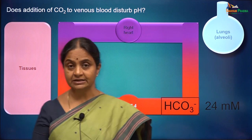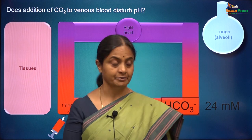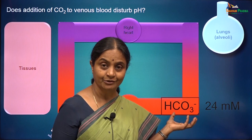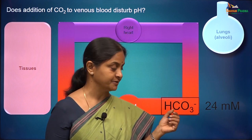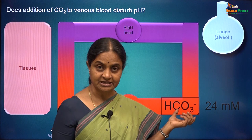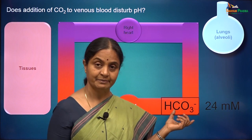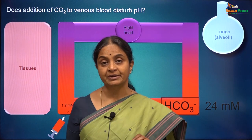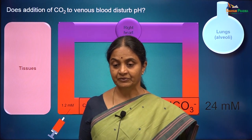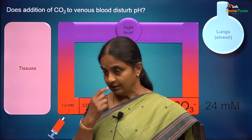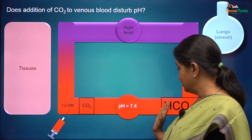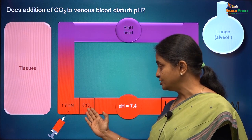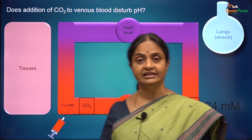That excess bicarbonate might result in alkalinization of blood because bicarbonate ions can generate hydroxyl ions and increase the pH. Just like Sargell's experiment, Natarajan, a senior technician, added 24 millimoles per litre bicarbonate to plain water and the pH was 8.6. That does not happen in blood either. The increase in pH due to bicarbonate is kept at bay because of the presence of carbon dioxide in arterial blood.